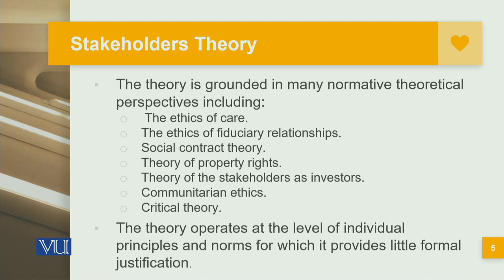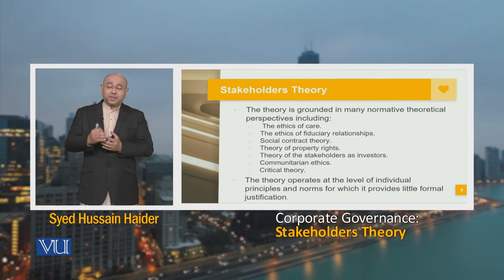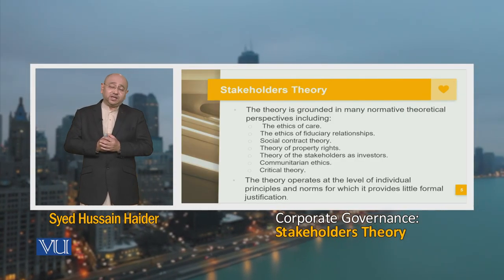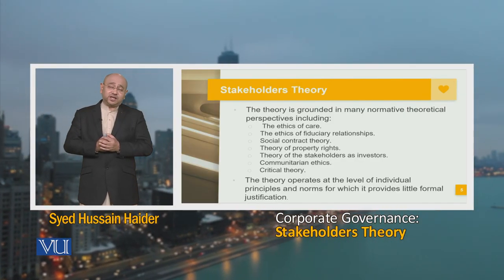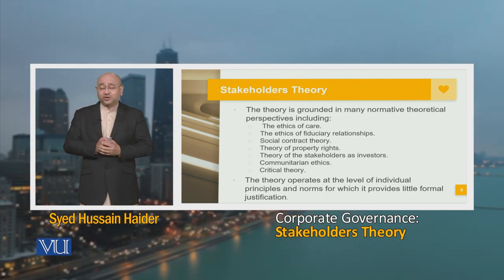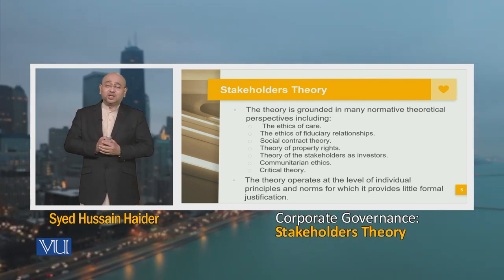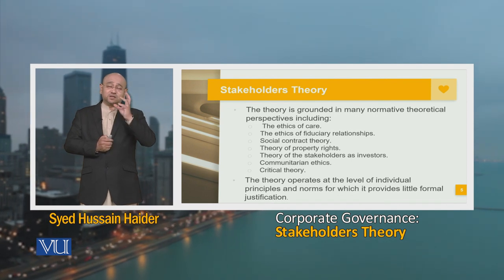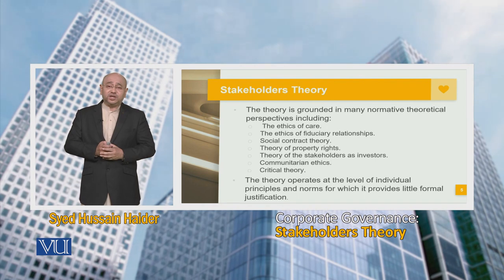The theory operates at a level of individual principles and norms, which it provides little formal justification. So despite the fact that there are so many elements and stakeholders, the domination of the shareholders tends to reflect and emerge from this particular theory.